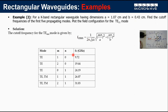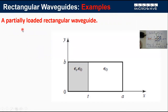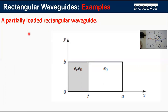The second problem is the partially loaded rectangular waveguide from Pozar. Here the waveguide has the usual a and b dimensions, but the inner volume contains two dielectric materials: air for a portion and a material with relative permittivity epsilon_r for a region 0 to t. Students are invited to apply the general TE/TM solution using Maxwell's equations to analyze this partially loaded structure, possibly in extra sessions.